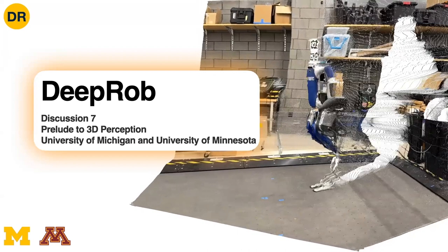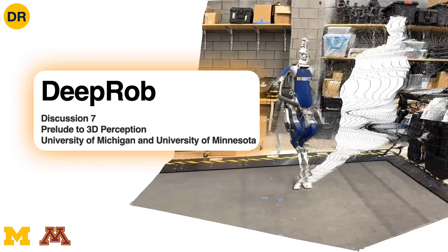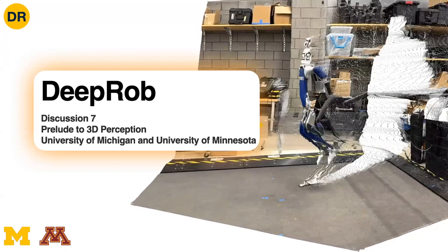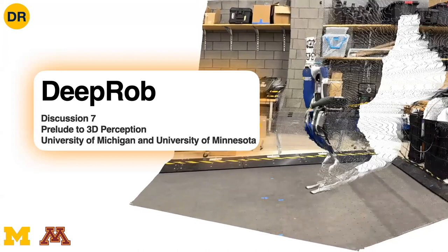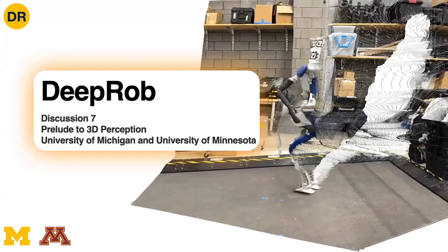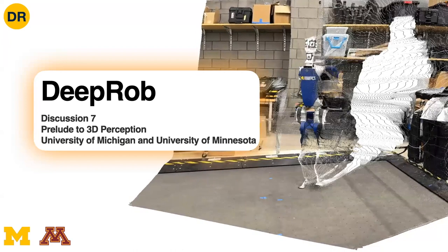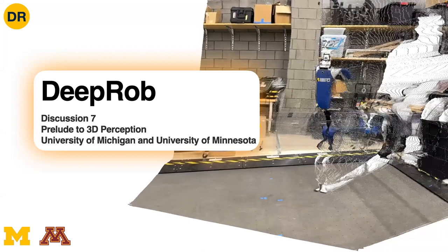Robots are not constrained to just pixel space. They actually have to deal with inputs that are not just constrained to 2D pixels. Also their outputs, when they take actions in the world, are going to want to consider the 3D space in which they can take actions. Today's discussion will hopefully set up some of these themes and lead nicely into the seminars next week.